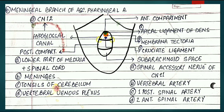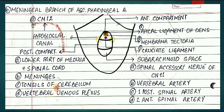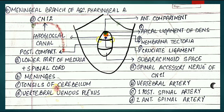On the lateral aspect of the foramen magnum is a canal called the hypoglossal canal, also called the anterior condylar canal. Its contents are the hypoglossal nerve - that is CN XII - and the meningeal branch of the ascending pharyngeal artery.